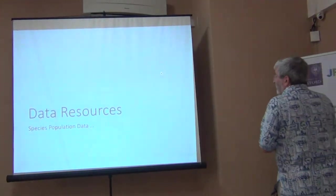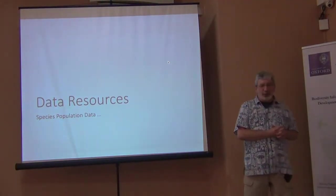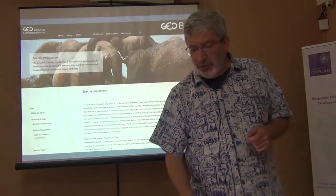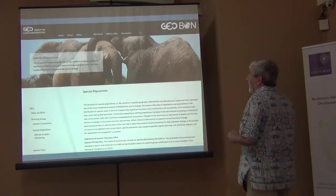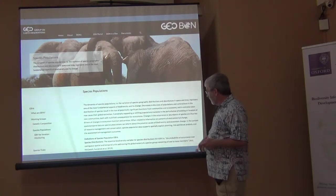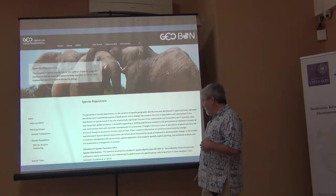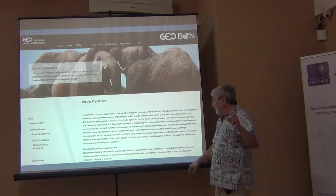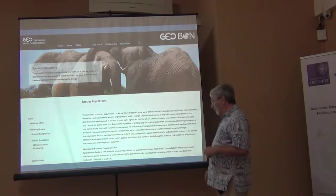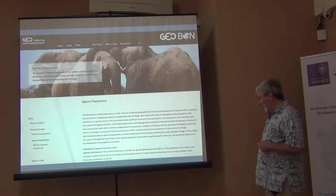For this essential biodiversity variable, what data resources exist? On the Geobond page, they're describing species population data. The essential biodiversity variable for species distributions is the probability of occurrence over contiguous spatial and temporal units, addressing the global extent of a species group consisting of one to many members.